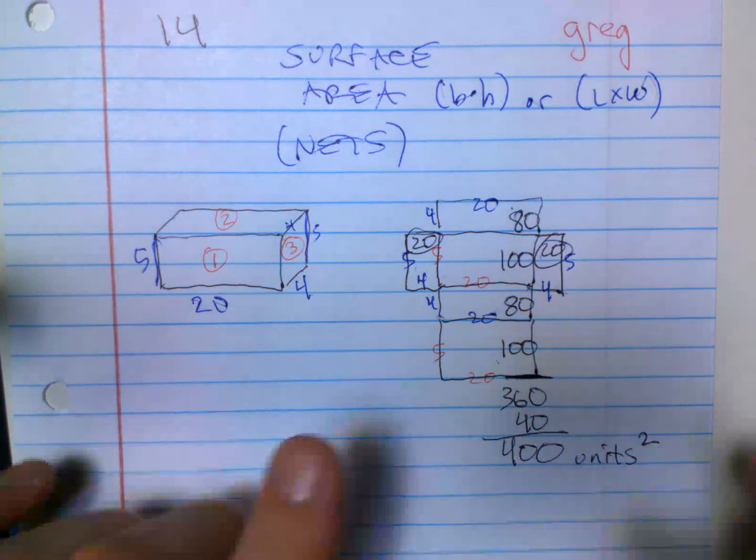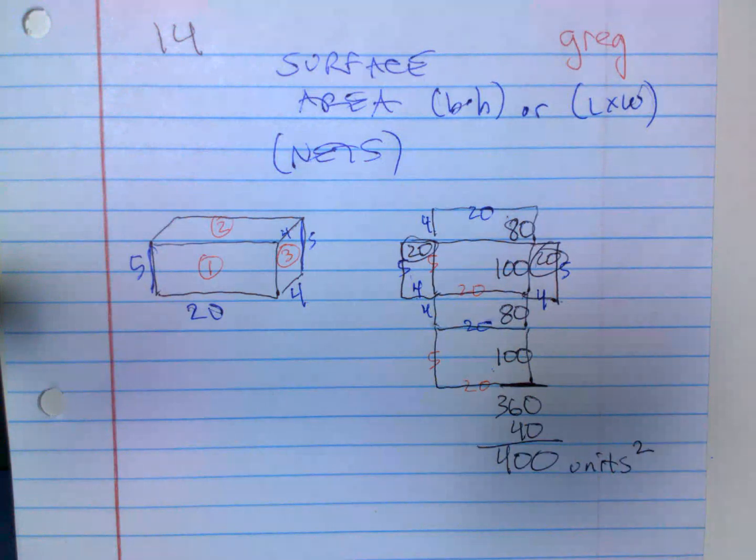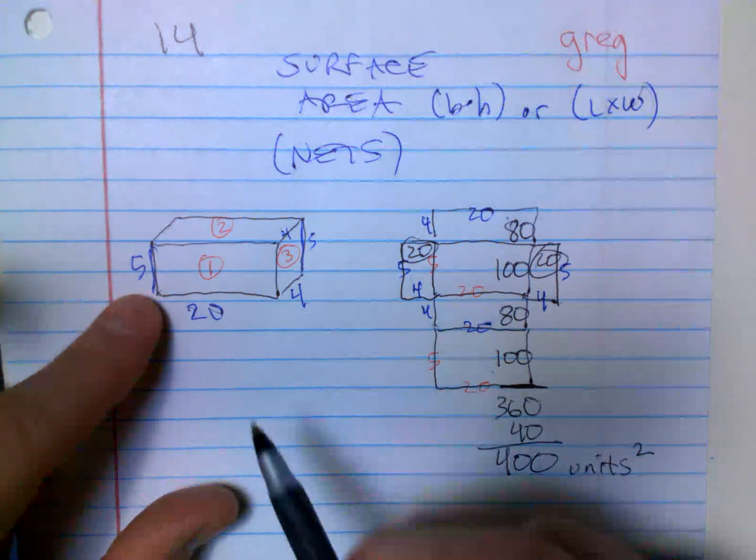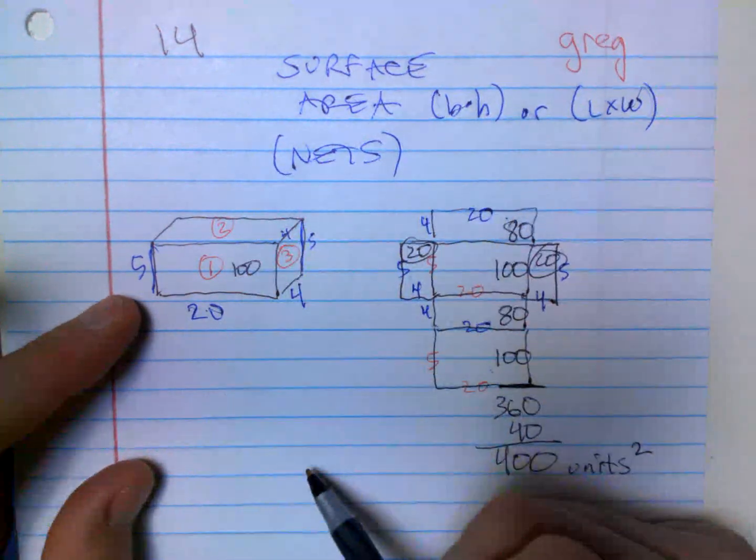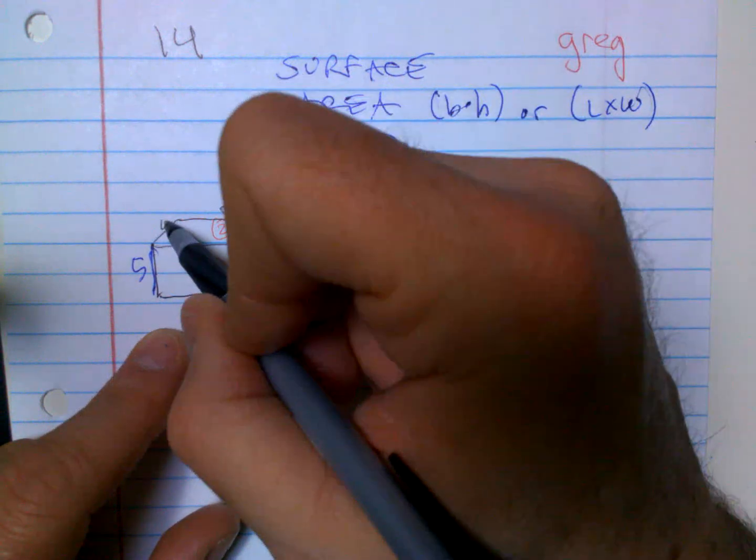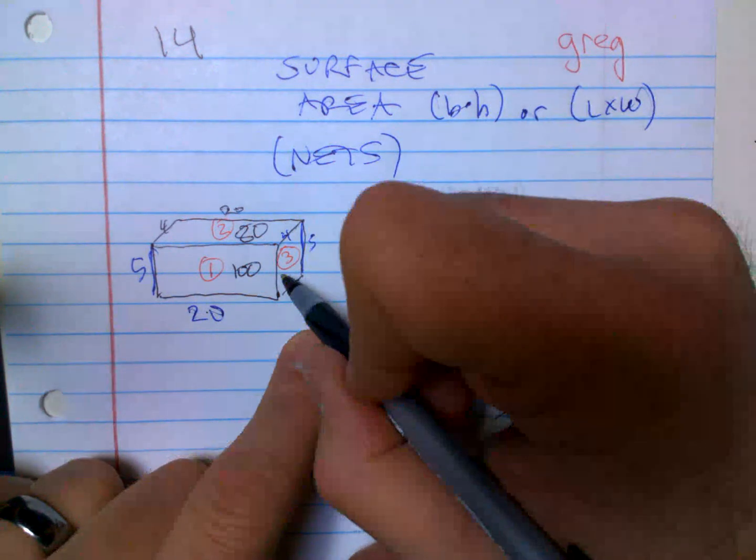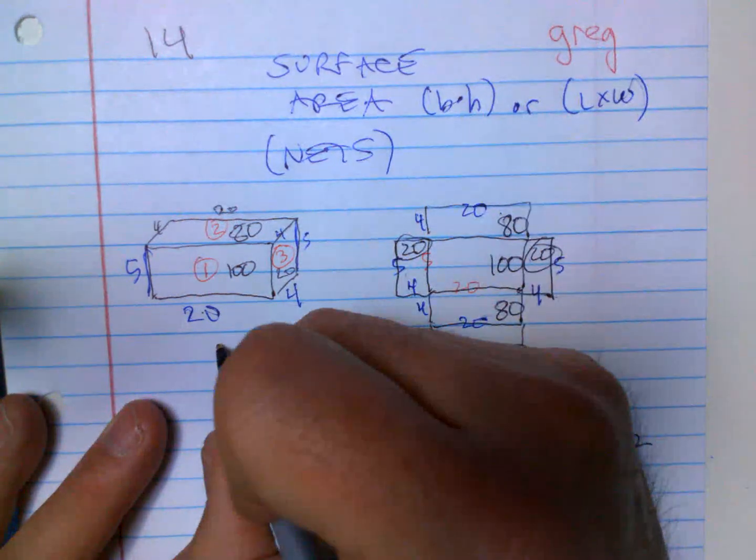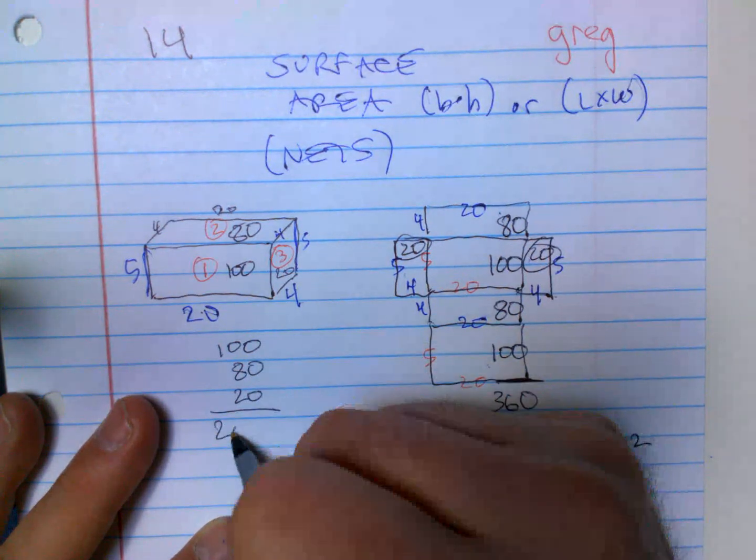Now here's a little quicker way to do that. I think this is the quickest way. So the front, 5 times 20 is 100. The top is 20 and it's 4, so 4 times 20 is 80. And the side, 4 times 5 is 20. So I have 100 plus 80 plus 20, so that's going to be 200.